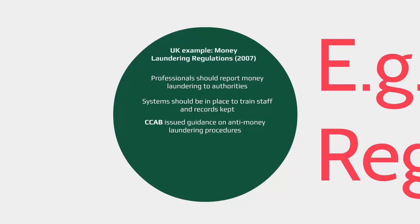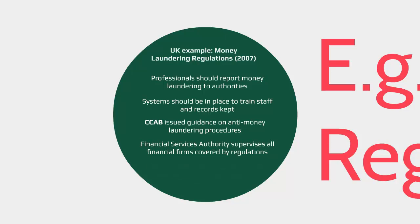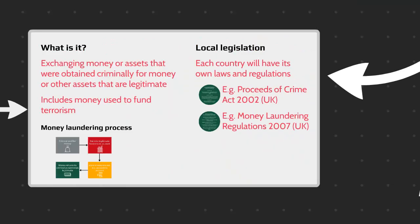The Money Laundering Regulations also put two different bodies in charge of regulating the relevant sectors. It falls on the Financial Services Authority to supervise all financial firms, while the Office of Fair Trading supervises consumer credit firms and estate agents.